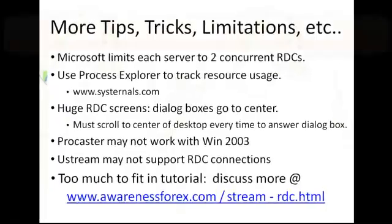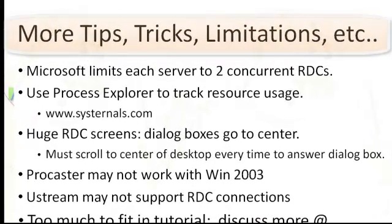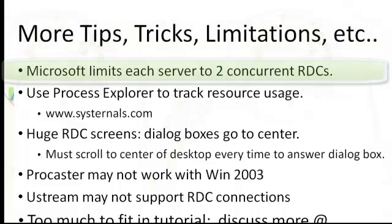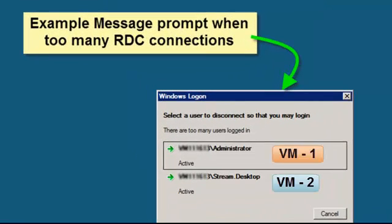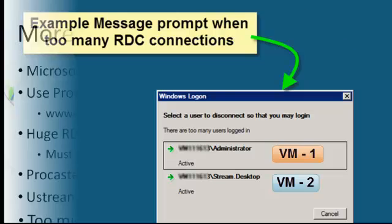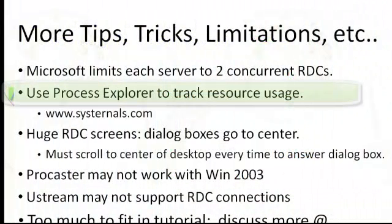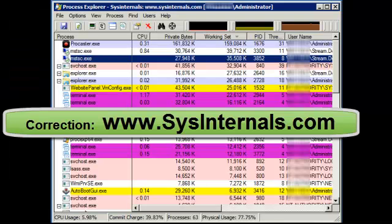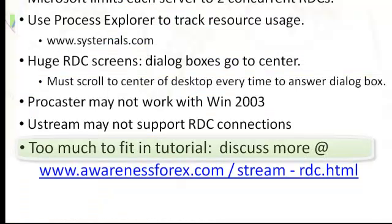I want to cover a couple of limitations I ran into while setting up cloud desktop streaming. You're only allowed to use two RDC connections at once. VM1 is always active; VM2 will only be active as needed. Another useful tool is Process Explorer by Sysinternals.com — I have it sorted by RAM so you can see which processes take up the most memory. We'll have to discuss more tips and tricks on the website at awarenessforex.com/streamrdc.html.